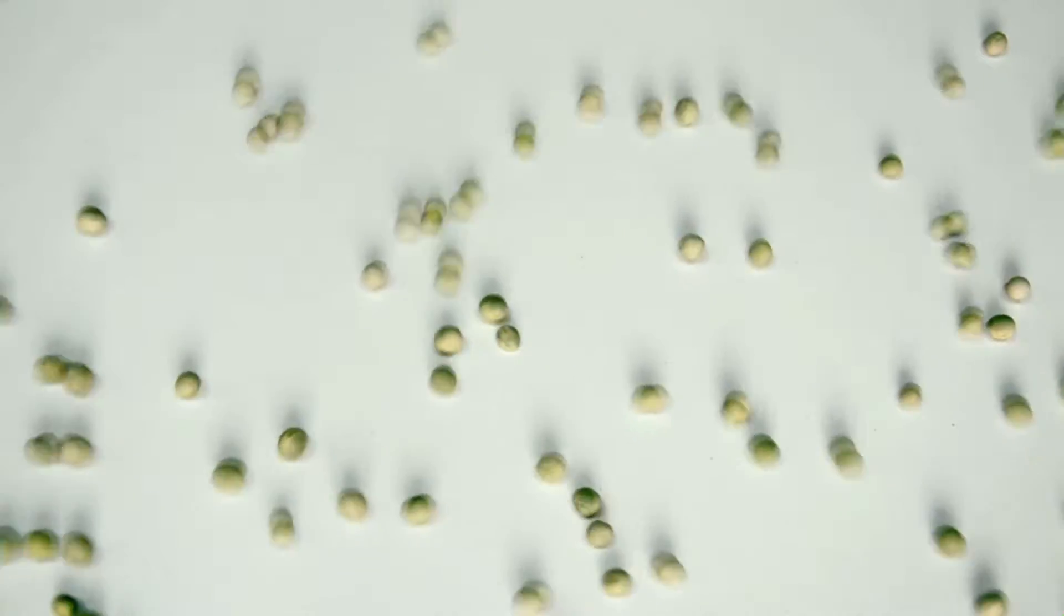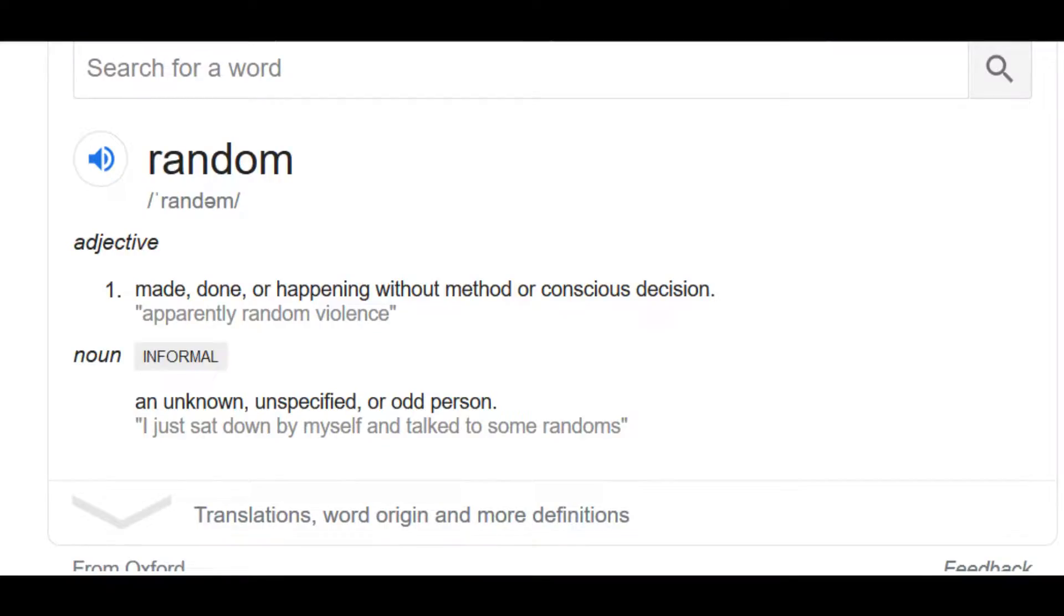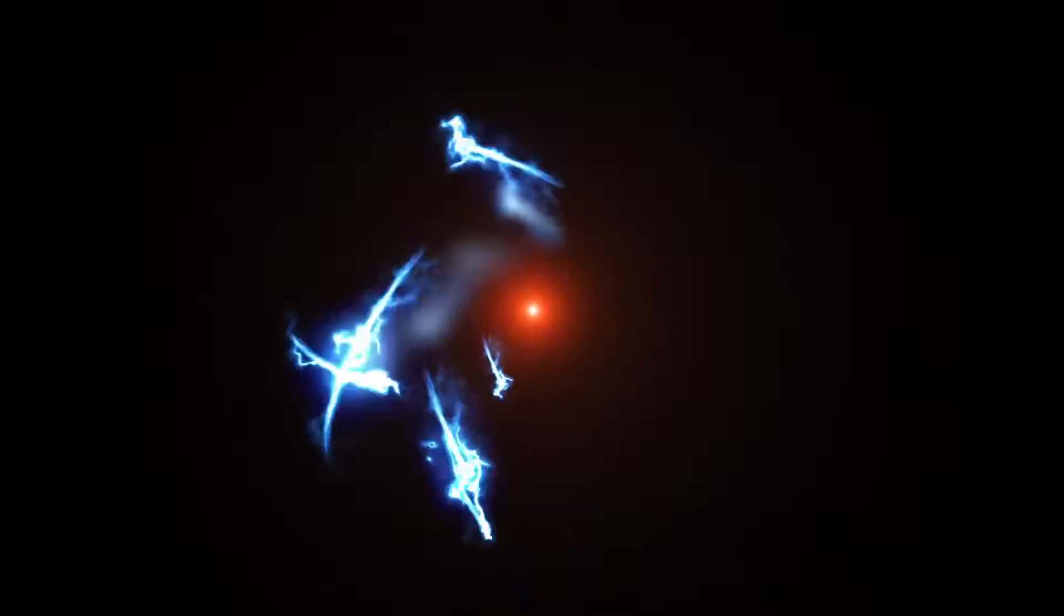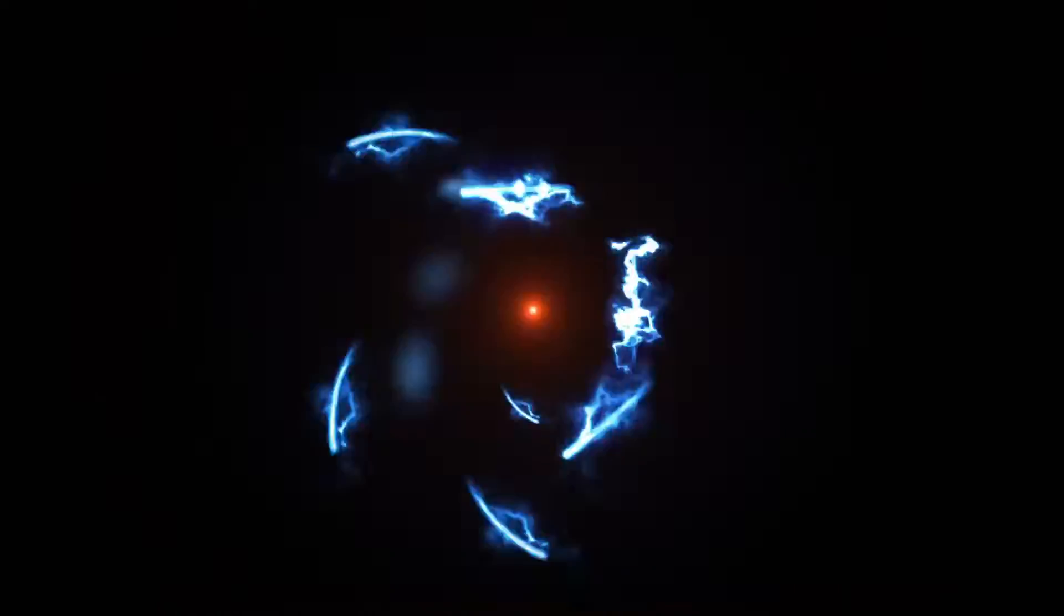In language, anything that merely appears to be unpredictable or lacking a pattern or a reason behind it is termed as a random process. But in scientific terms, for something to be random, it should be truly unpredictable. That is, it should not have any higher laws that govern its result. All the other processes which only appear to be random to the human brain are called pseudo-random processes.